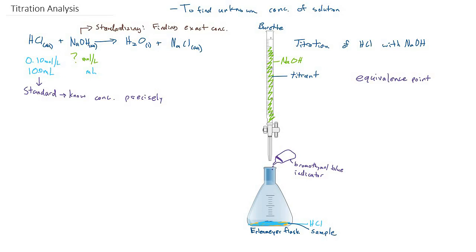Now we don't call it the equivalence point when we're talking about what we observe. We call it the end point. Now the end point is empirical. It's something we can observe. The equivalence point was theoretical. It was in theory that point where there's equal amounts of acid and base.